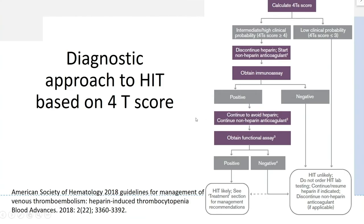For the diagnostic approach: if a patient is suspected of having HIT, apply the 4T score. A low clinical probability means less than 1% chance of HIT, and guidelines suggest you can continue heparin without additional testing. For intermediate or high probability, immediately discontinue heparin and start a non-heparin anticoagulant, then obtain an immunoassay — the ELISA, run daily in most hospitals. If the immunoassay is negative, HIT is very unlikely and heparin can be restarted. If positive, continue avoiding heparin and await functional assay confirmation.